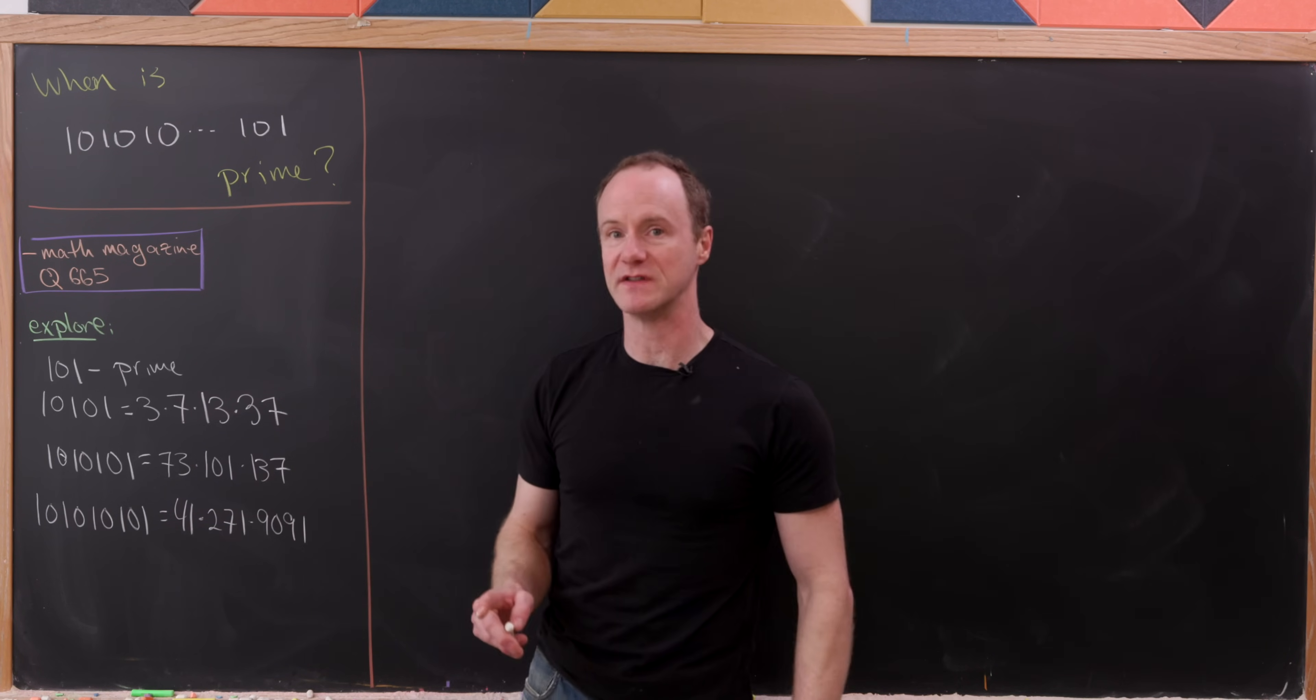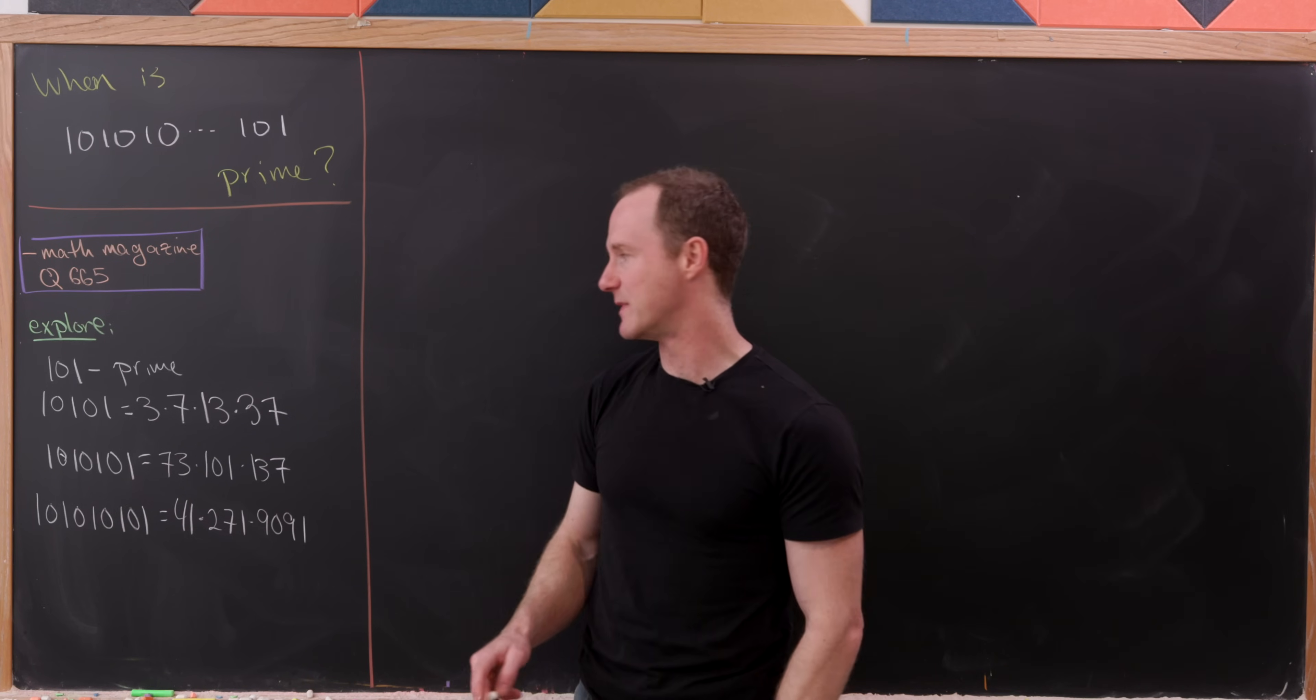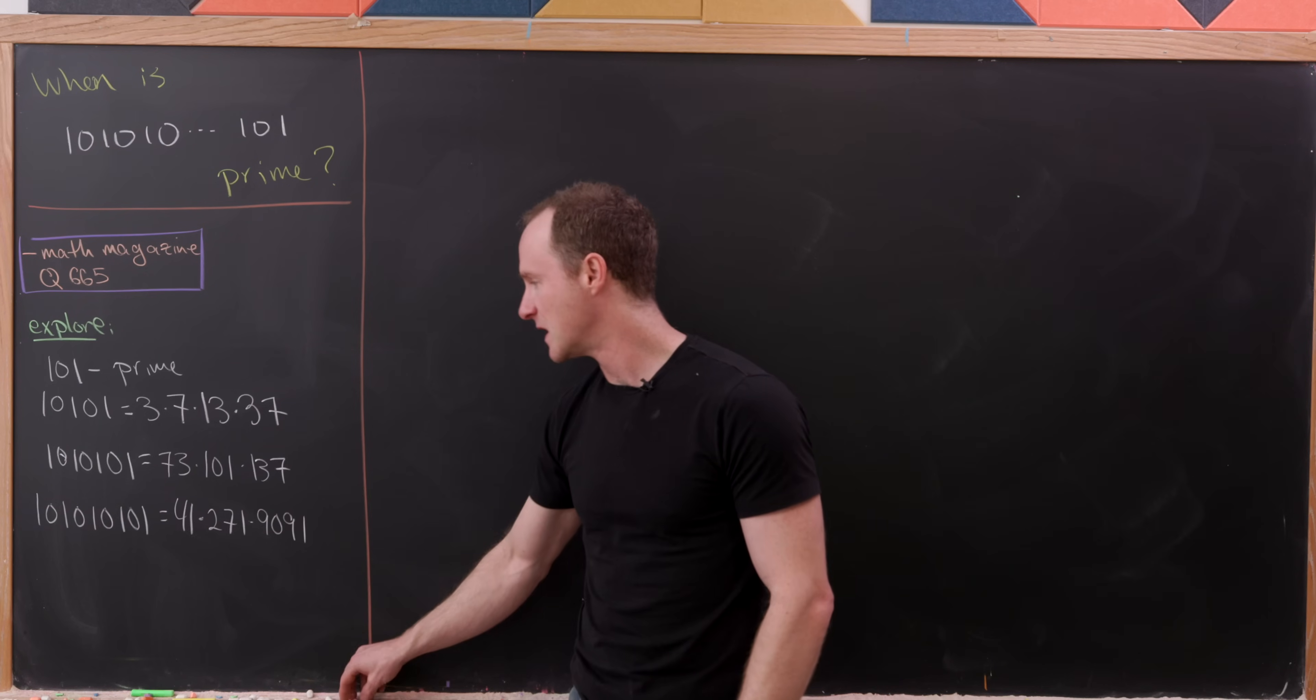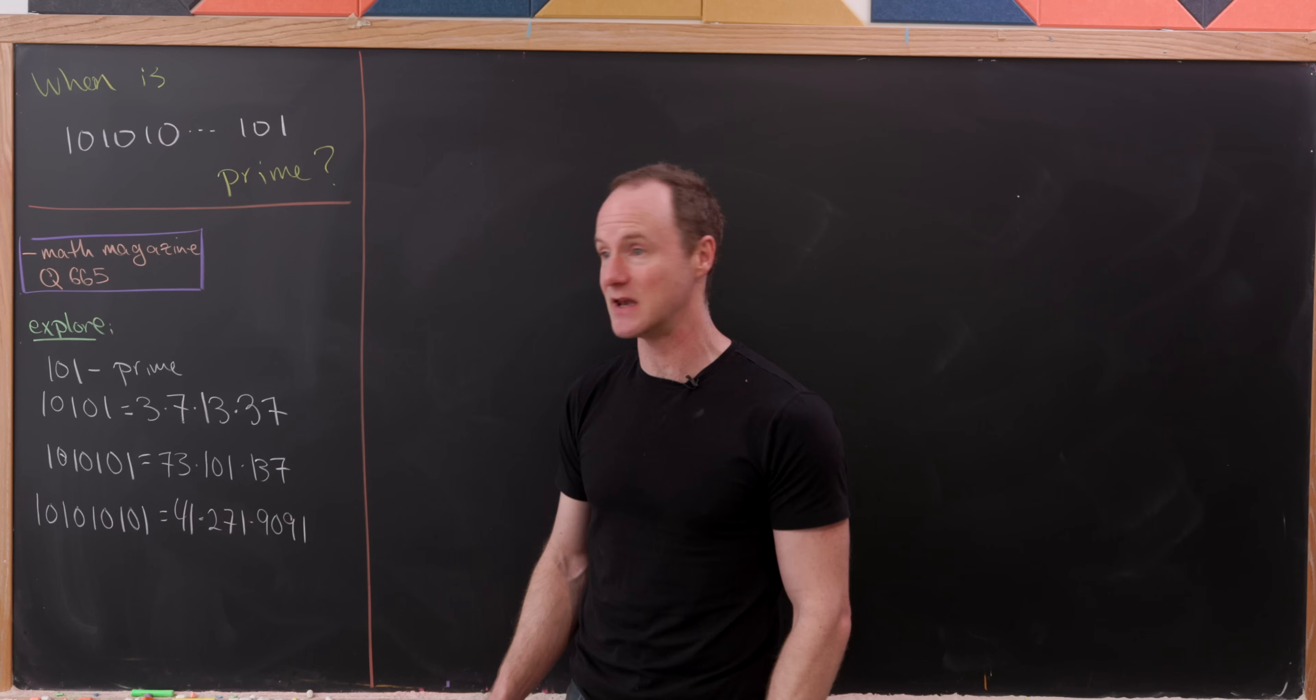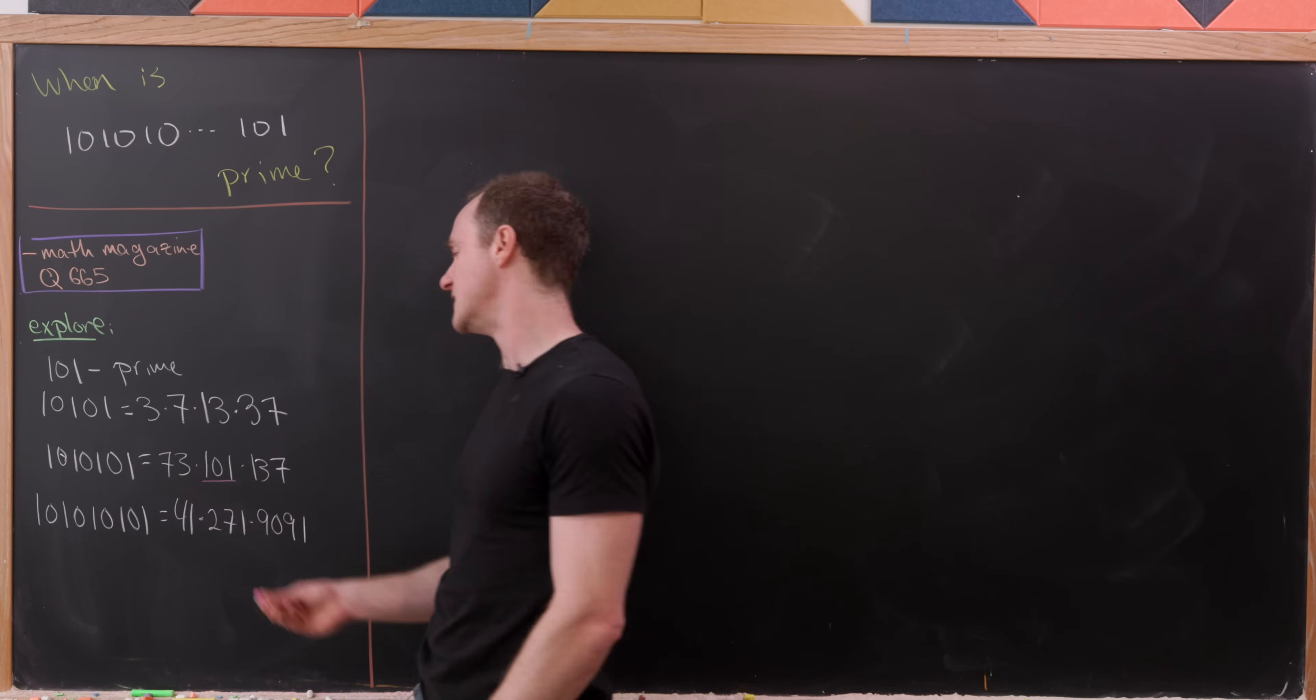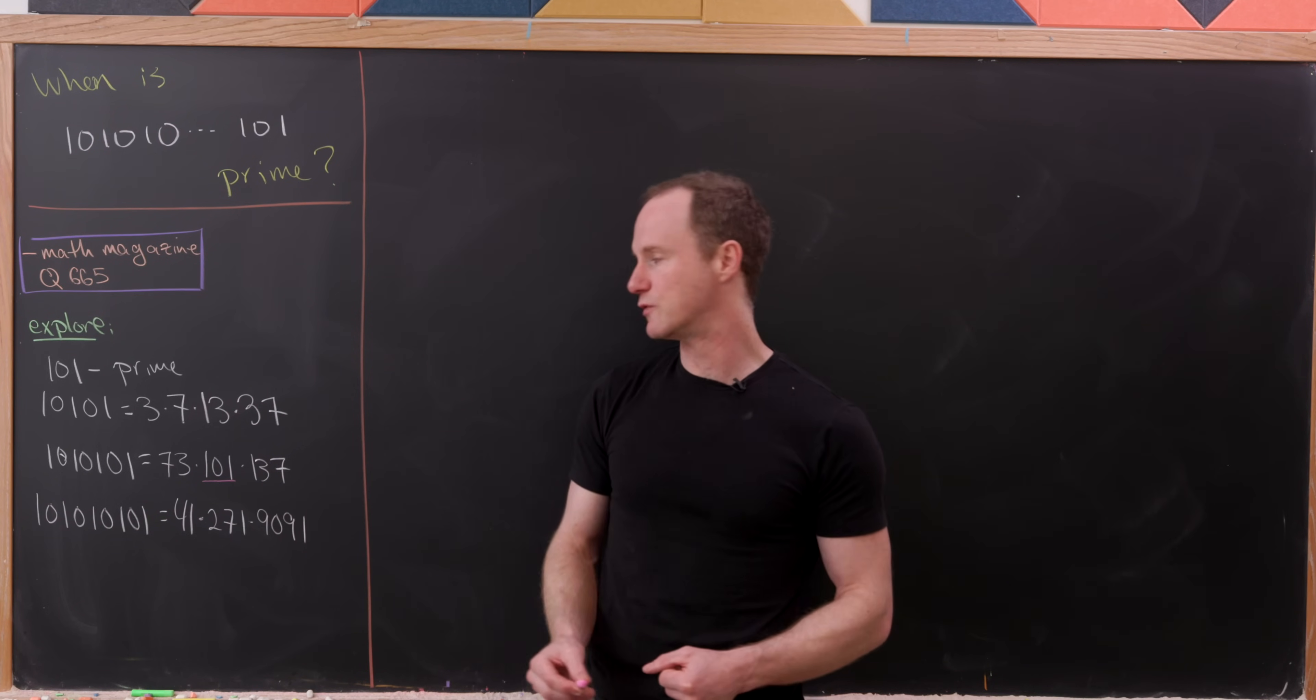And then the second one of these numbers, 10101, is not prime. It's in fact 3 times 7 times 13 times 37. And then if we add another 10 at the beginning, it's again not prime. The interesting thing about this is it's divisible by 101, which we'll use as we move forward.